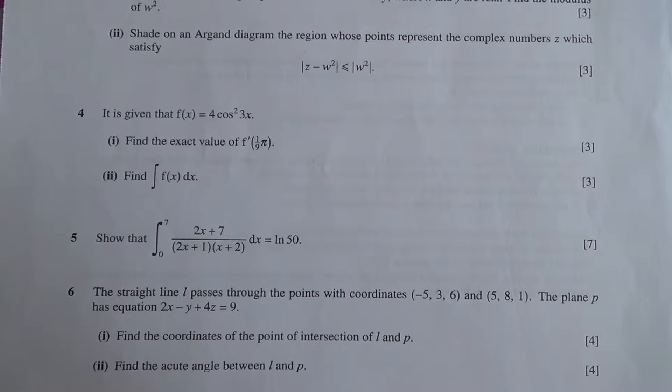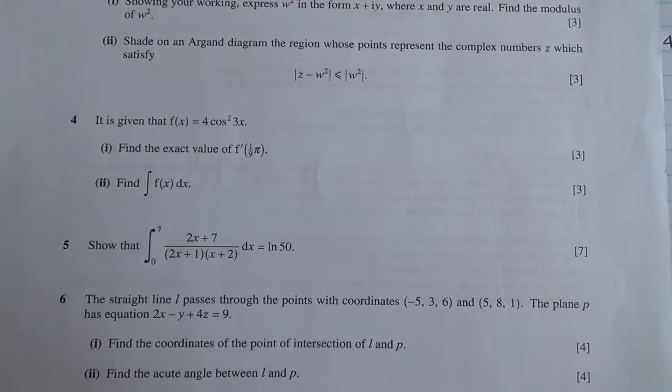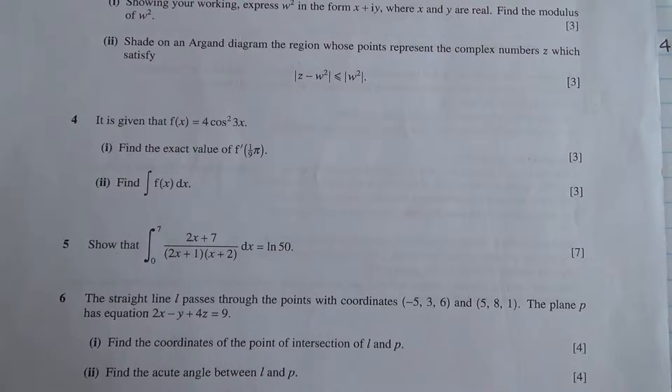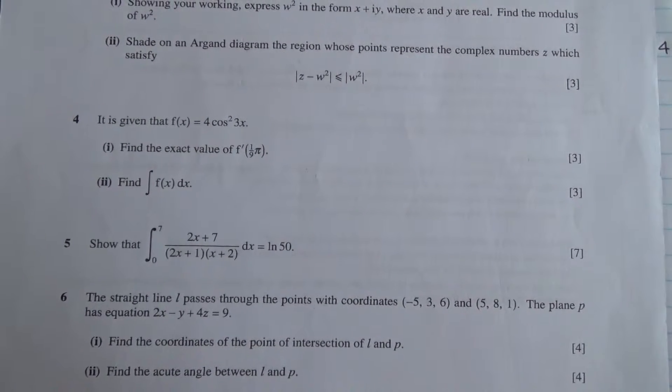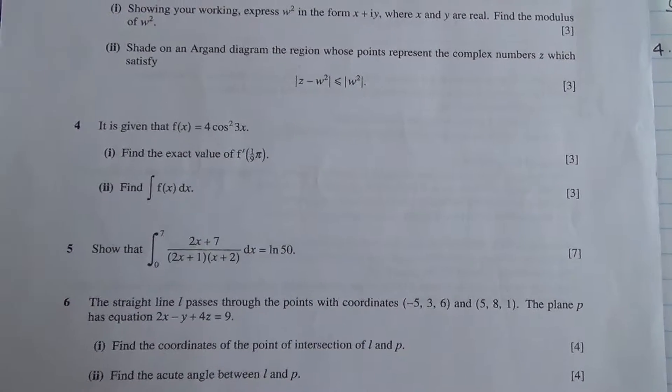Hi, for this question, number 4, it is given that f(x) is equal to 4 cos squared 3x. First part, find the exact value of f dash π/9, and also find the integral of f(x) dx.